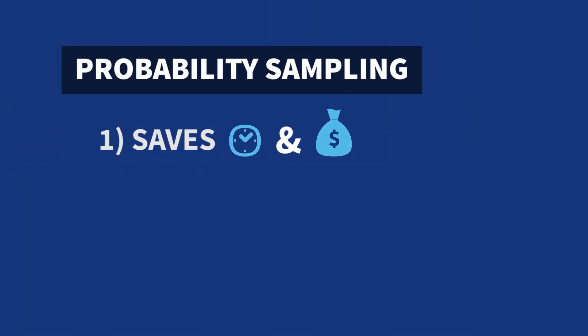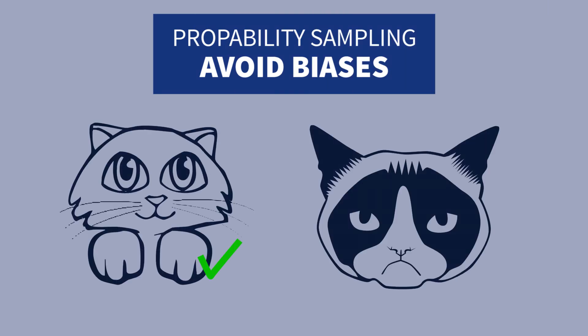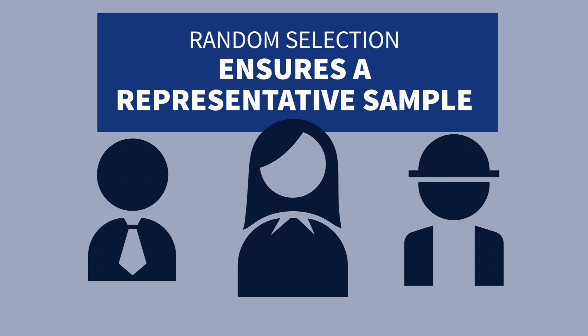Second, the use of random selection methods helps avoid biases in selecting people to study. Research has shown humans are not very good at being random. If you and I went outside to survey people about any topic, we're likely to go up to people who look friendly, avoid people who look like they might be in a bad mood, and approach people that look and dress like us. These conscious or subconscious biases would produce a biased, inaccurate sample. Random selection helps us avoid these biases and produces a sample that is generally very representative of the true population.